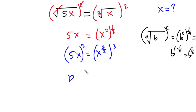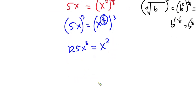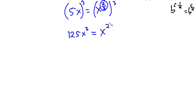This is equal to — now if I multiply 2 over 3 by 3 — we have x to the second power here. Now let's go ahead and move this one to this side and set it equal to 0.